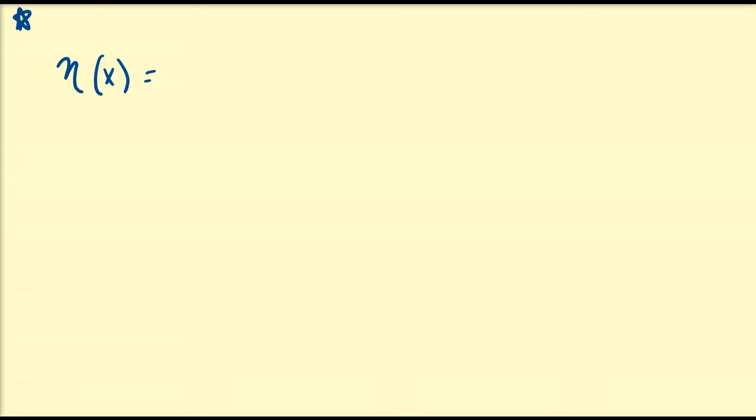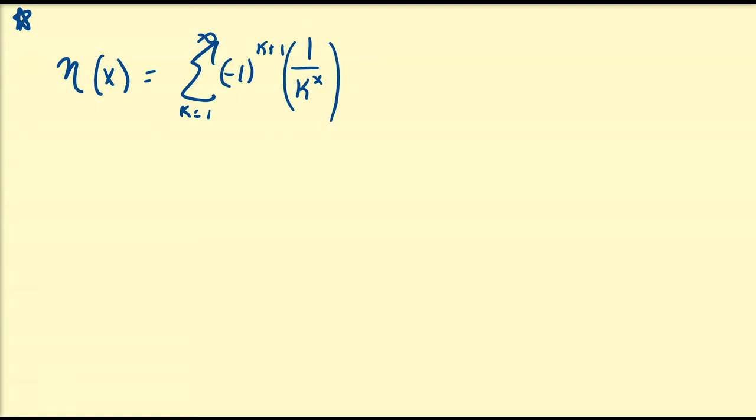Hello there. In this video, we're going to discuss the Dirichlet eta function. The Dirichlet eta function, which is typically abbreviated by the Greek letter eta of x, is equal to the sum from k equals 1 to infinity of negative 1 to the k plus 1 times 1 divided by k to the power of x.